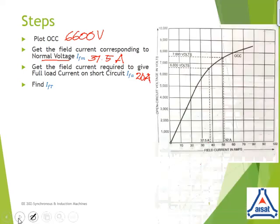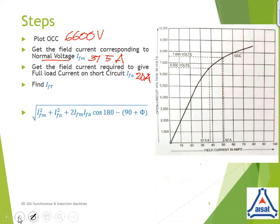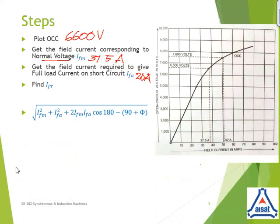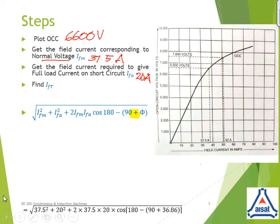Next, we need to find IF total. IF total is given by the equation: square root of IFM square plus IFA square plus twice IFM, IFA cos 180 minus 90 plus phi. This formula is being used because in the question, it is clearly stated that it is a lagging load. 0.8 power factor lagging load. That's why the connecting sign is plus over here. If it was a leading load, then the connecting sign would have been 90 minus phi. So, the formula for finding IFT holds the same. Square root of IFM square plus IFA square plus twice IFM, IFA cos 180 minus 90 plus or minus phi. Plus phi for lagging loads and minus phi for leading loads. Square root of 37.5 square plus 20 square plus twice 37.5 into 20 into cos 180 minus 90 plus phi.